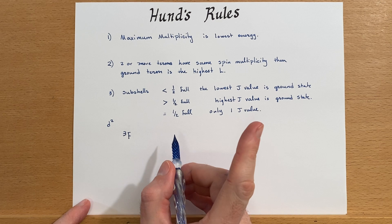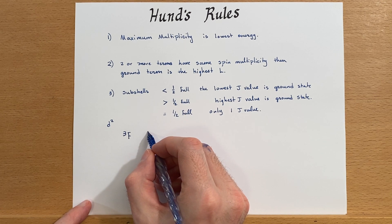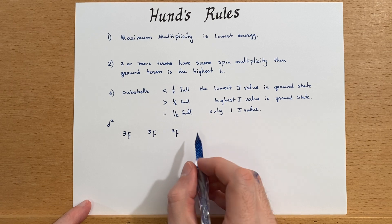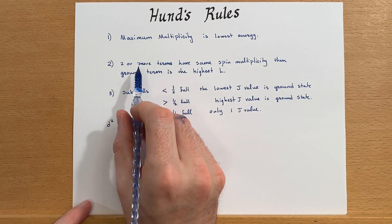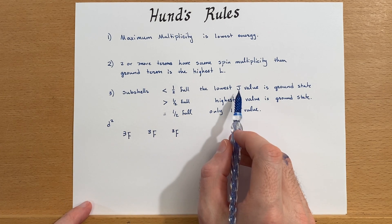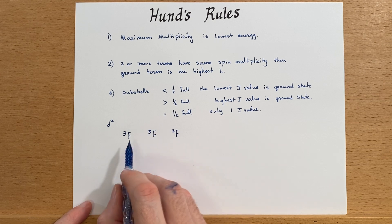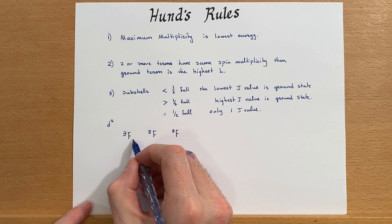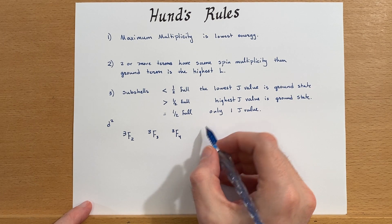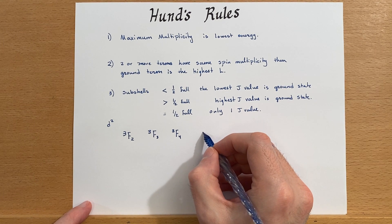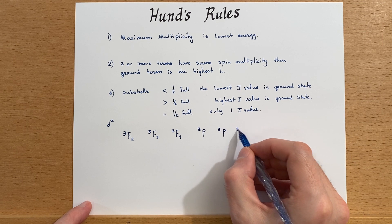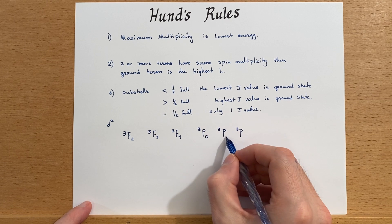We had three J values for the triplet F term. Since D2 is definitely less than half full, the lowest J value is the ground state, so we count up in J values. The possible ones we determined were 2, 3, and 4. The next lowest energy term will be the triplet P, and again this had three J values, starting with 0 and going up to 2.